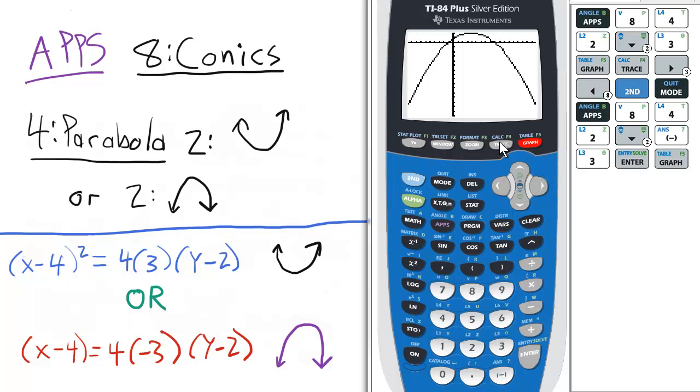Again, you can press trace and scroll along by pressing the right and left arrow keys to see where the points are where you should graph it on your quiz, test, exam, or homework.